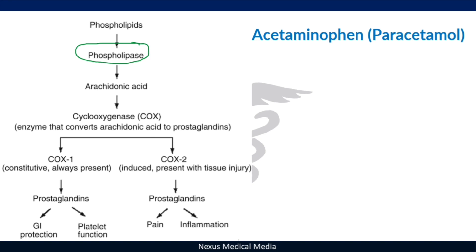Focus on COX-1 and COX-2. COX-1 is constitutive — it means it's always present. COX-2 is induced — it's only active when there is tissue injury. Both give us prostaglandins. In the COX-1 pathway we have GI protection (gastrointestinal tract protection) and platelet functioning like adhesion. For COX-2, remember induction of pain and inflammation.